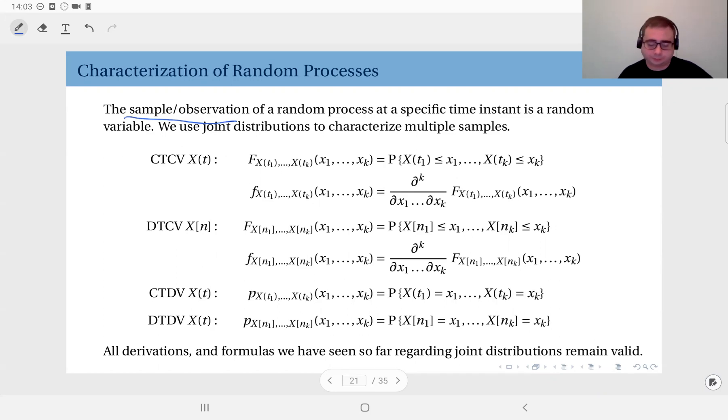Of course, for different types of random processes, we have different types of representations, but the idea is the same. You have the joint CDF of the observations obtained at T1, T2, T3, etc., up to T sub k. So this is a joint distribution of k random variables, which are k observations. And the definition is the exact same thing from our discussion in random vectors, in joint distributions. And of course, you can also define the joint PDF through this differentiation.